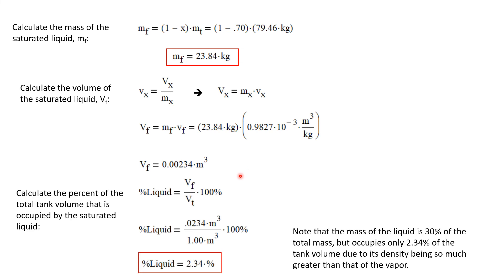Now we want to calculate what percentage of the tank volume is occupied by the liquid. That's the volume of the saturated liquid divided by the total volume of the tank: 0.00234 cubic meters divided by one cubic meter. So the liquid occupies only 2.34% of the tank, which is interesting because the mass of the liquid is 30% of the total mass, yet it occupies only 2.34% of the total tank volume — because the density of a saturated liquid is so much greater than the density of vapor.